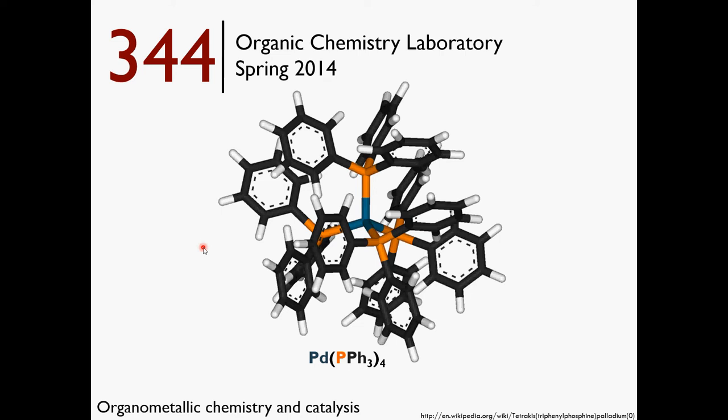Welcome back to the organometallic chemistry lectures for CHEM 344. This is the second lecture, and in this lecture I'm going to focus on talking about transition metal chemistry, particularly palladium, and how those palladium coordination complexes can be used as catalysts to facilitate organic chemical transformations that can't be done in the absence of catalysts.